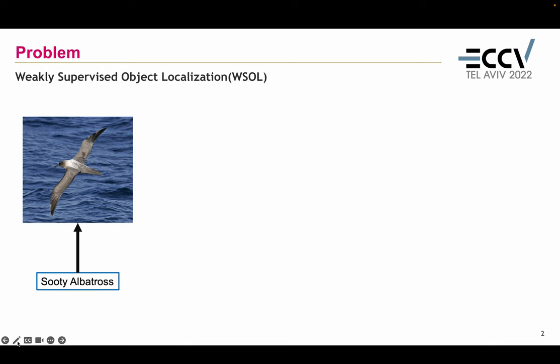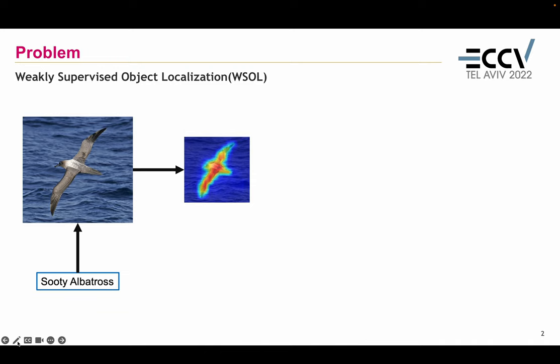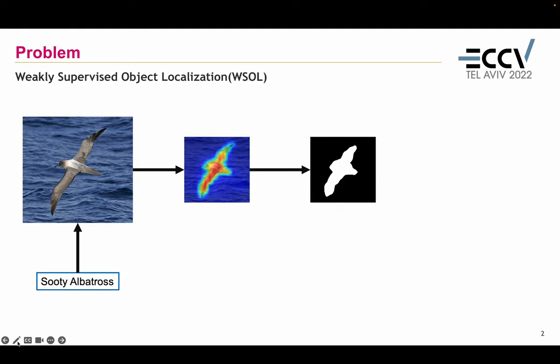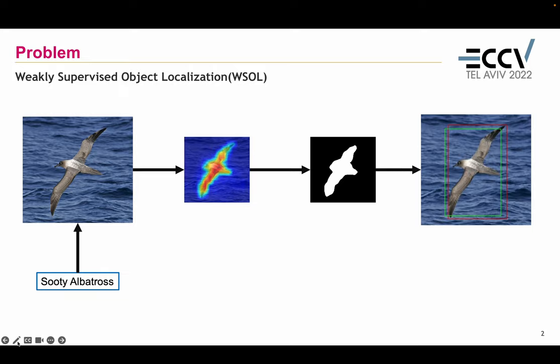The typical procedure consists of the following steps. First, it predicts the class activation map to highlight the object. Then, it picks a threshold to transform the prediction into a binary map. And thus, the bounding box is generated to identify the object.